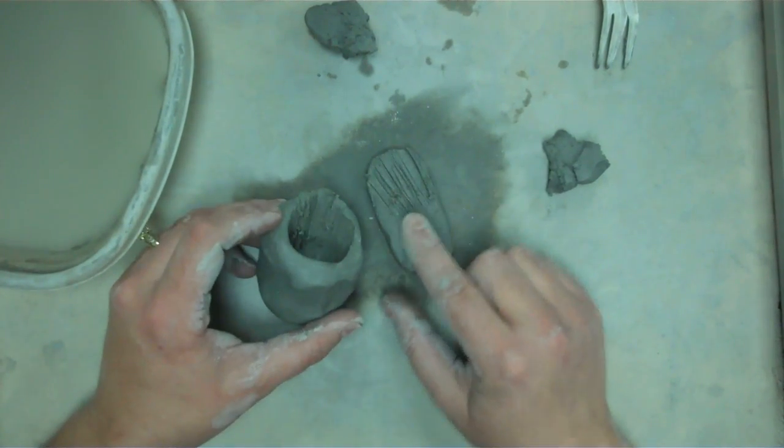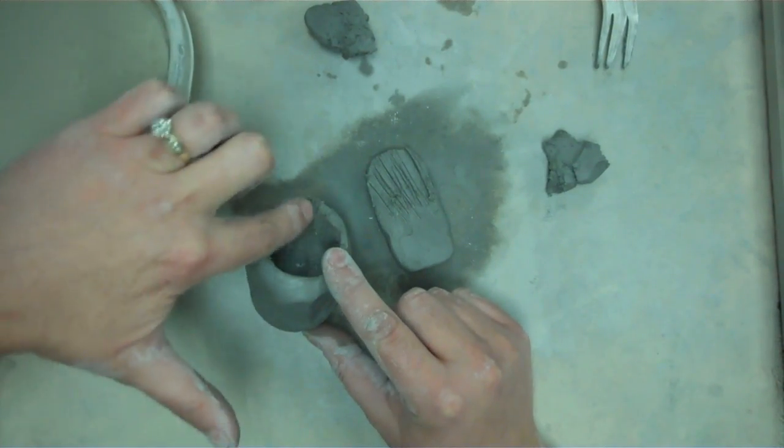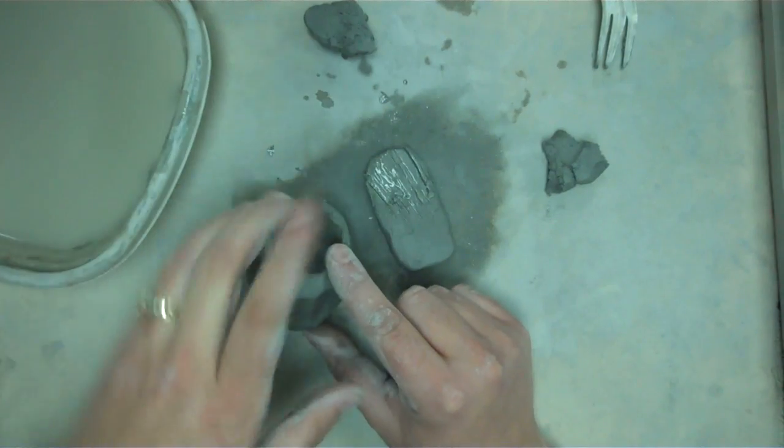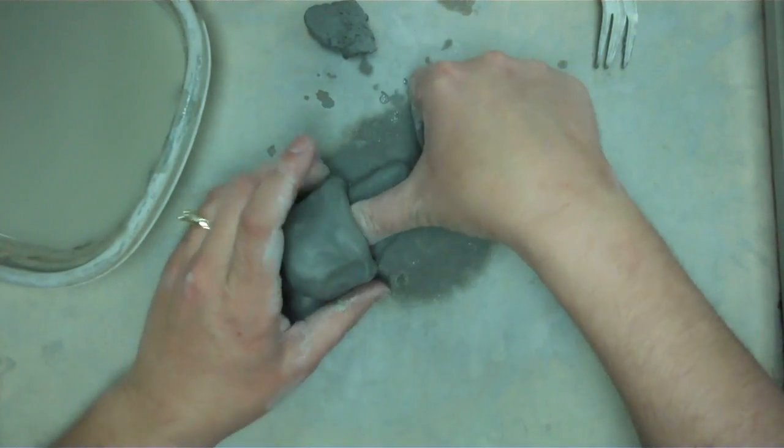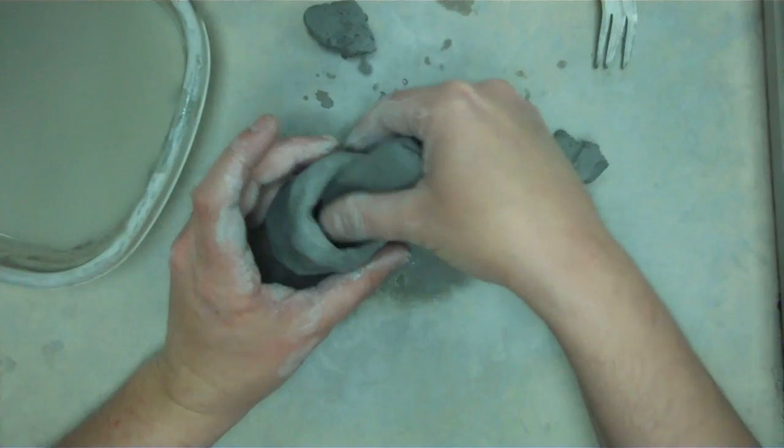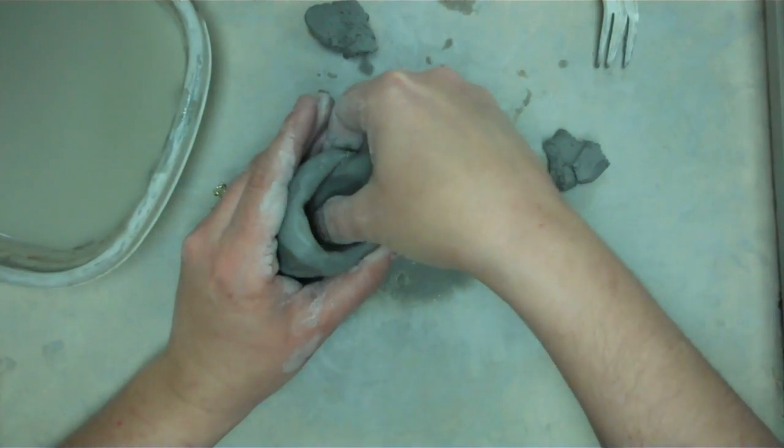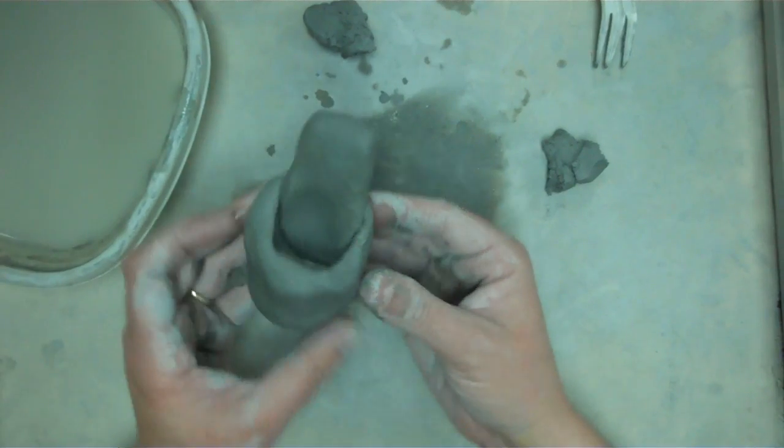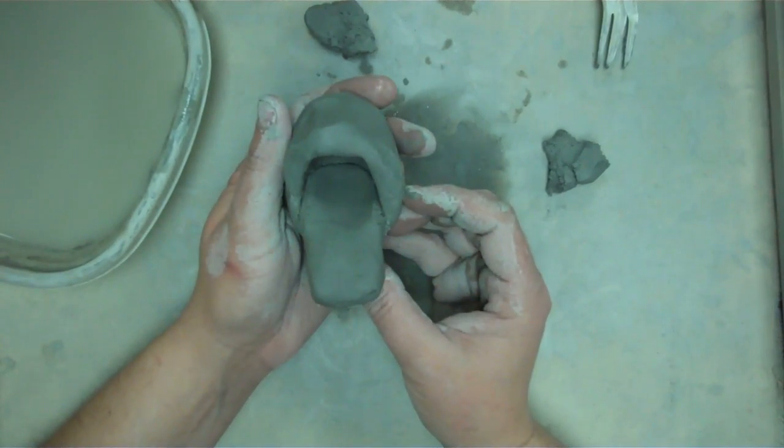The very last part is you have to add slip, which is like glue for clay, before you attach the two pieces. And just press firmly down so the two pieces of clay stick together. So there is our monster's tongue.